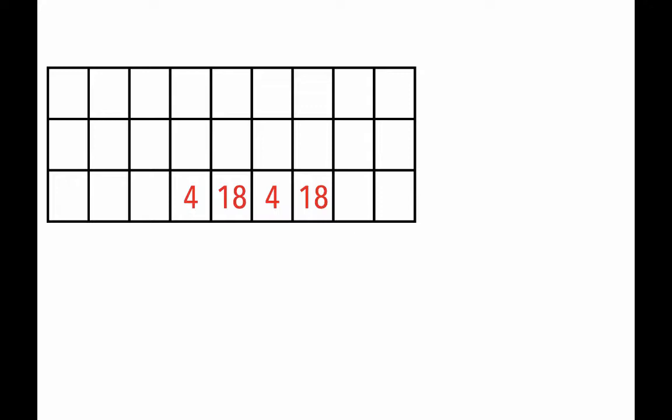In this case, we see 4, 18, 4, 18. In the end, this bottom row will contain the encryption of one of the elder names.